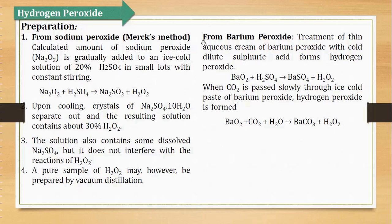The second method is from barium peroxide. Barium peroxide aur sulfuric acid jab aapas mein react karte hain — ismein bhi sulfuric acid jo hai wo cold lena hai — to hamare paas barium sulfate and hydrogen peroxide aa jayega. Ek aur method hai barium peroxide se hi: agar usme carbon dioxide pass karenge in the presence of water, it will give barium carbonate and hydrogen peroxide.